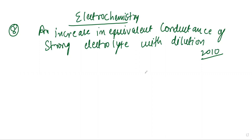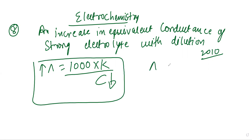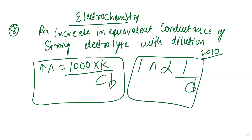So what will be the answer? For dilution, the molar conductivity formula we know is 1000K by C. On dilution, the number of current-carrying particles per unit centimeter cube decreases. After dilution, concentration decreases, so molar conductivity increases because they are inversely proportional. Molar conductivity is inversely proportional to concentration, so after dilution molar conductivity increases, and ionic mobility in turn increases the equivalent conductivity of a strong electrolyte.